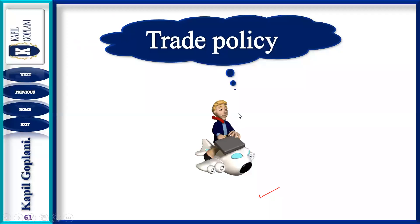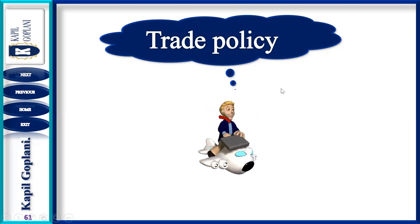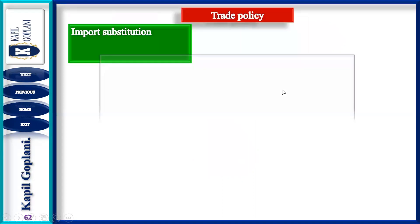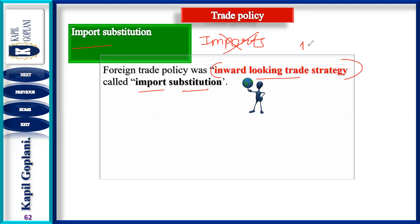In the previous lecture we covered the major issues of IPR, the Industrial Policy Resolution 1956, and how it affected trade policy. Now let us understand what the trade policy was from 1950 to 1990. We were focusing on an inward looking strategy, which is known as import substitution. The inward looking strategy focuses on the import substitution policy.